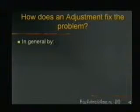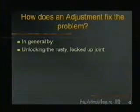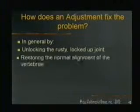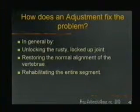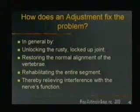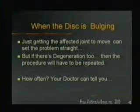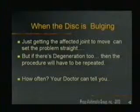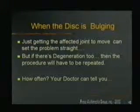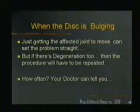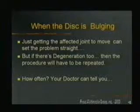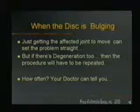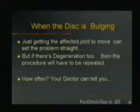How does the chiropractic adjustment fix the problem? By unlocking the rusty locked-up joints, restoring the normal alignment of that pair of vertebrae, rehabilitating the entire spinal segment, and thereby relieving interference with the nerve's function. In the case of a bulging disc, just getting the affected joint to move can set the problem straight. If there's degeneration too, the procedure will have to be repeated. The facets may want to lock up again because they may become sticky from the degenerative process. Your doctor will be able to tell you how often you'll need to be treated, probably after a couple of adjustments.